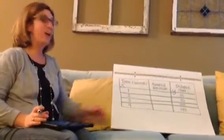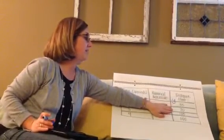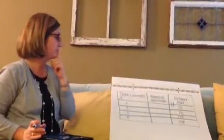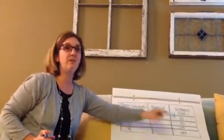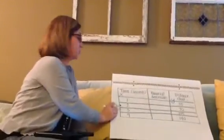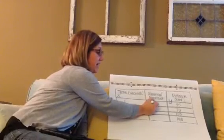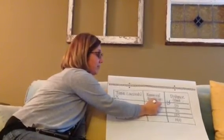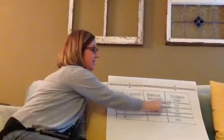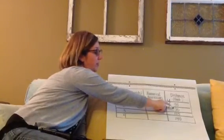Let's think about our rule. We have 35, 70, 105, 140. Do you see the rule? It's increasing by 35. So my numerical expression: 1 times 35 for 1 second gives us a total of 35 feet.